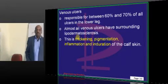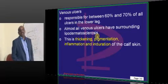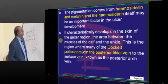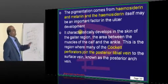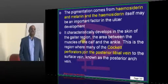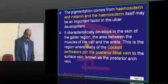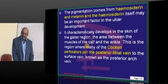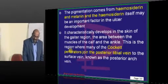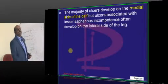Whereas venous ulcers — there is pigmentation of the skin. Lipodermatosclerosis is what is found. There is thickening, pigmentation, inflammation, and induration of the calf skin whenever there is a venous ulcer. That pigmentation is due to hemosiderin and melanin. Classically, venous ulcers are found in the gaiter's area — that is, between the muscles of the calf and ankle, medial aspect. That is the typical location where the perforators of the posterior tibial vein are located. It is the medial side of the calf.